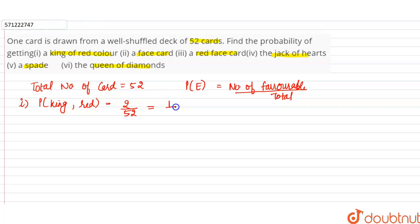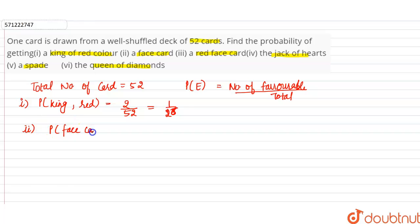So probability will be equal to 2 divided by 52, which equals 1 by 26. In the second part, it is asked to find the probability that the card drawn is a face card.